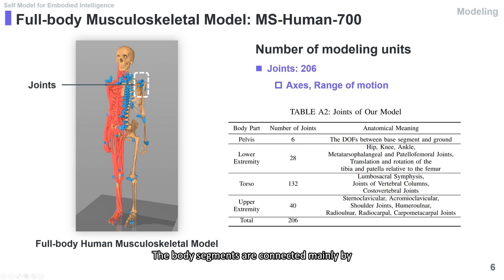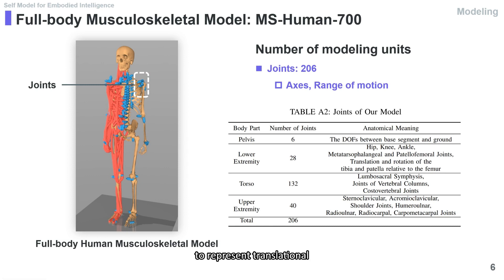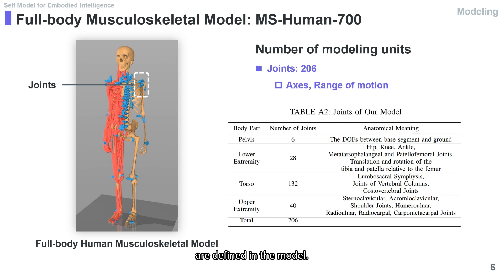The body segments are connected mainly by hinge joints. There are also slide joints to represent translational characteristics between segments. The axis and range of motion of each joint are defined in the model.